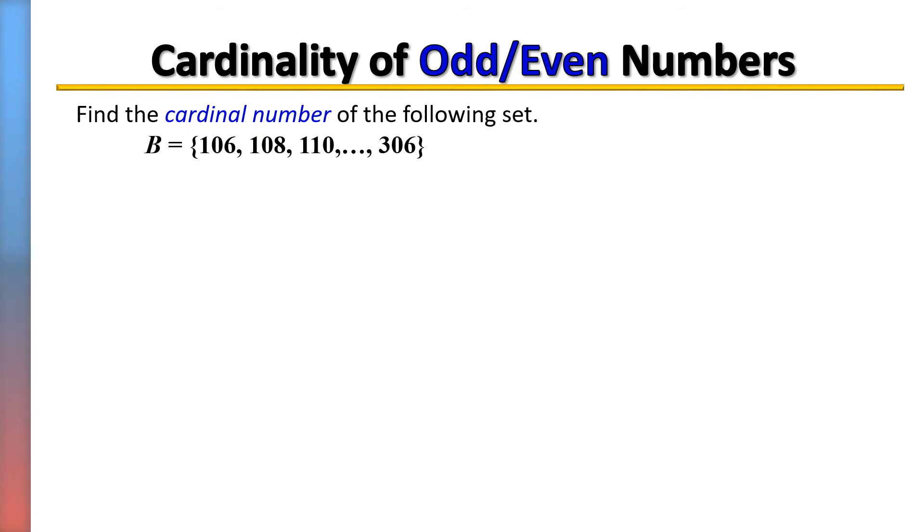All right, so in this set, set B, notice you have consecutive numbers but you have consecutive even numbers, which means you don't have all your numbers. You're missing half of them. Anytime you have only even or odd numbers, you have only half of your numbers.